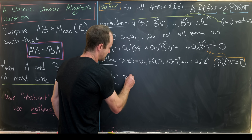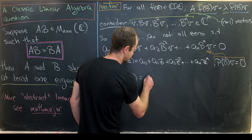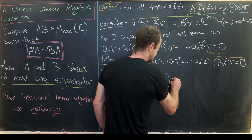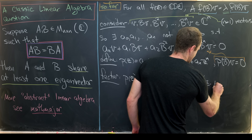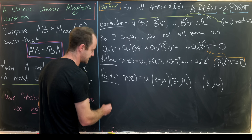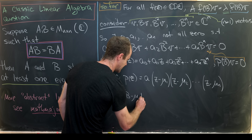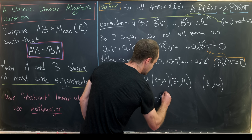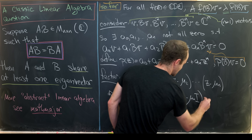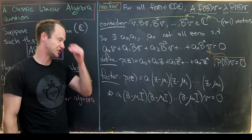We factor P(Z) as a times (Z - mu_1)(Z - mu_2)...(Z - mu_n), pulling out the leading coefficient a. Rewriting the equation P(B)V = 0 in factored form gives us a times (B - mu_1 I)(B - mu_2 I)...(B - mu_n I) times V equals zero. This is just a re-expression of the linear dependence relation in factored form.